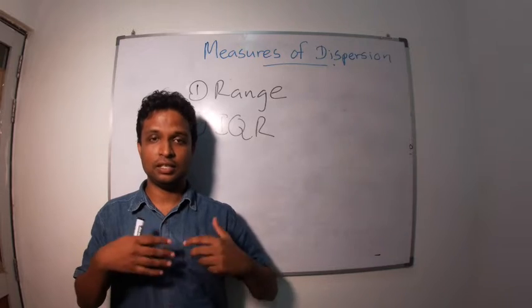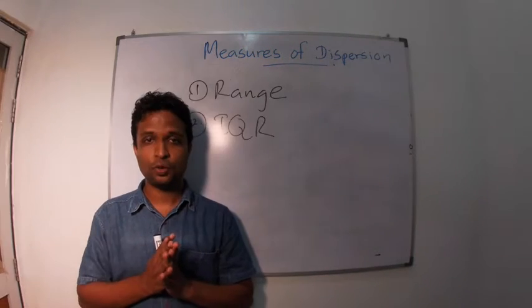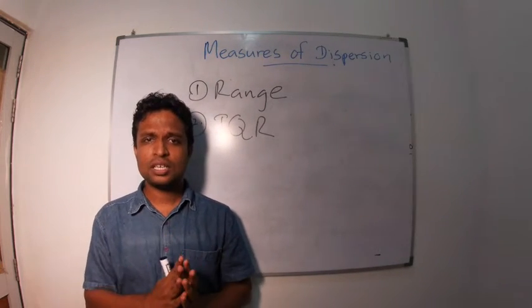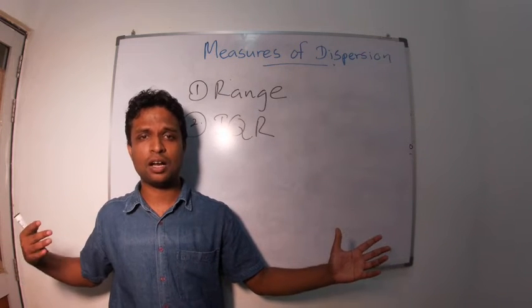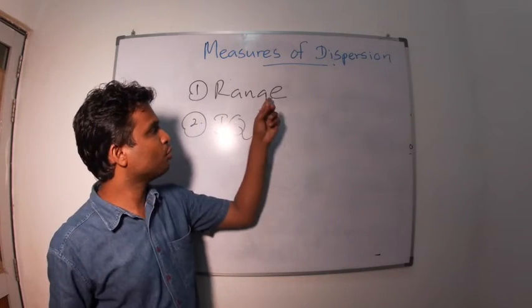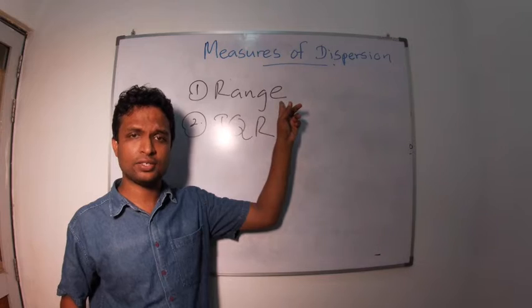So we introduced range and inter-quartile range, but to describe distribution of many values, assume that there are 100 values. To describe the distribution of 100 values, we use only 2 values here. The largest and smallest value in range.